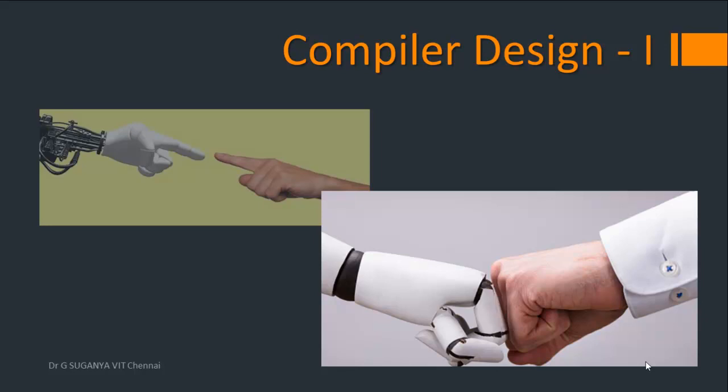To talk to a machine, that intermediate software or machine should be able to translate human communicative language to a machine communicative language and vice versa. That's where the necessity of compiler design comes in.